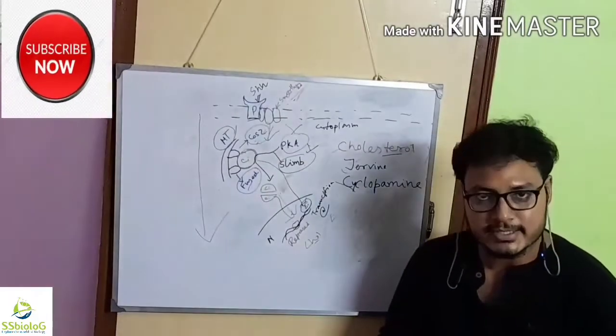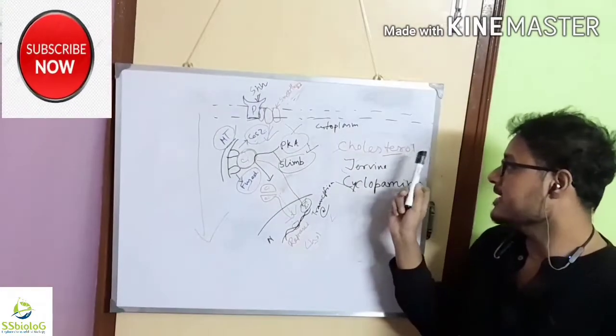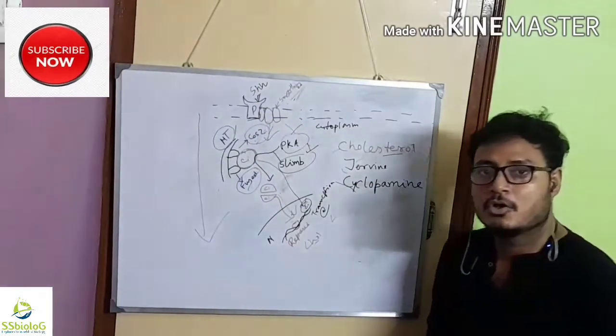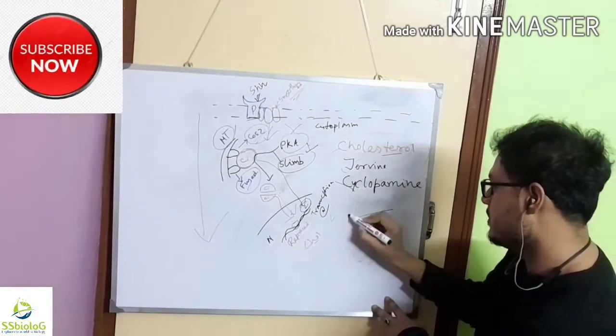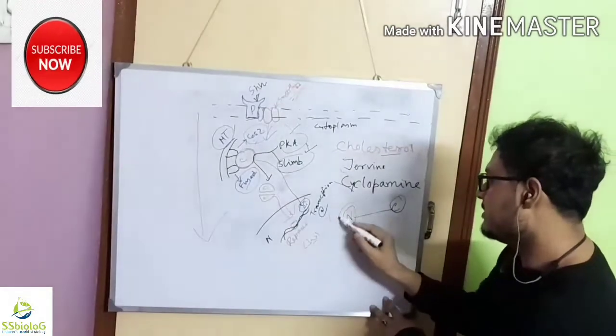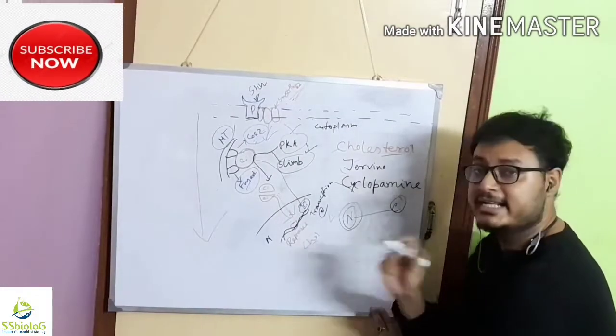Another important thing in sonic hedgehog signaling is cholesterol. Cholesterol catalytically gives sonic hedgehog protein. Sonic hedgehog protein has two parts: N-terminal part and C-terminal part. The N-terminal part is catalytically active and is secreted in that form.